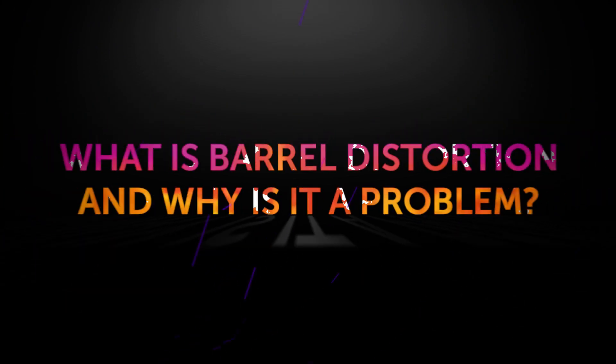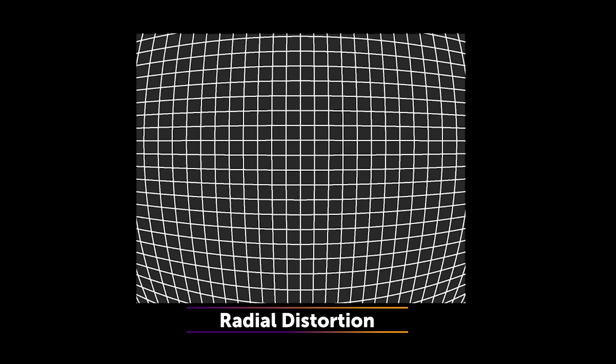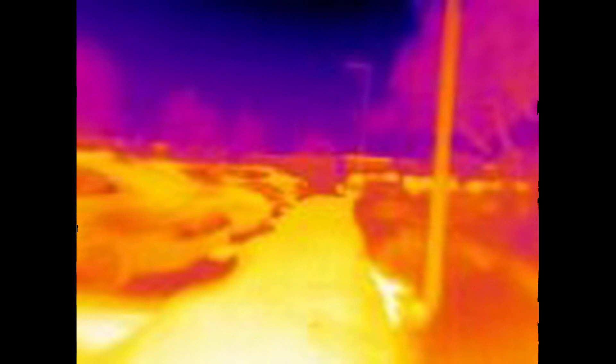Barrel distortion is created by the wide field of view lens, causing the center of the image to appear more magnified than the edges, making straight lines appear to curve around the edge of the image.